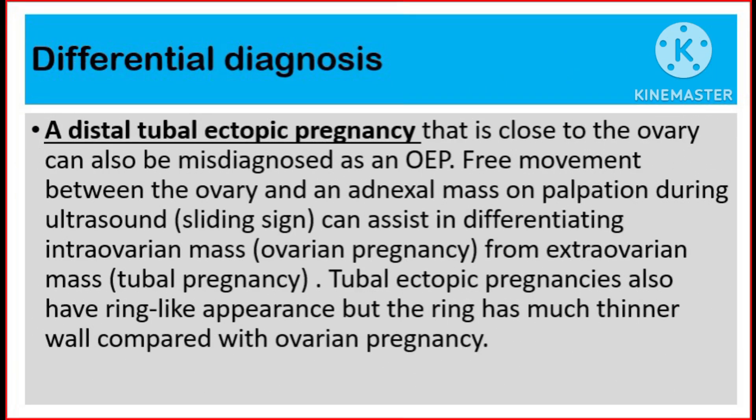A distal tubal ectopic pregnancy that is close to the ovary can also be misdiagnosed as an ovarian ectopic pregnancy. Free movement between the ovary and adnexial mass on palpation during ultrasound, which is called the sliding sign, can assist in differentiating an intra-ovarian mass (ovarian pregnancy) from an extra-ovarian mass (tubal pregnancy). Tubal ectopic pregnancies also have a ring-like appearance, but the ring has a much thinner wall compared with the ovarian pregnancy.